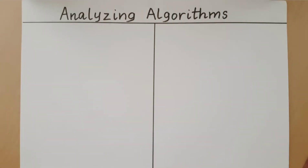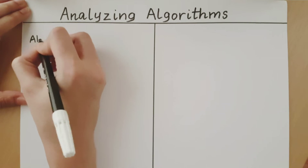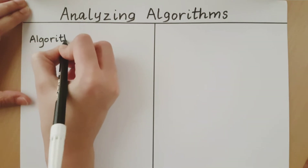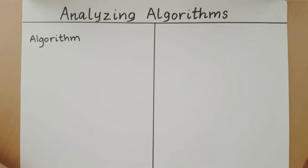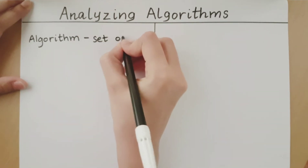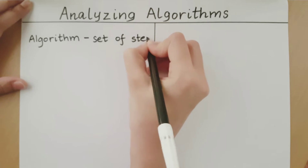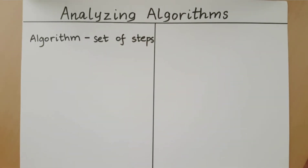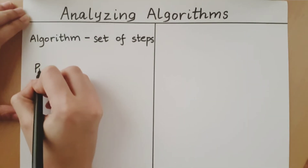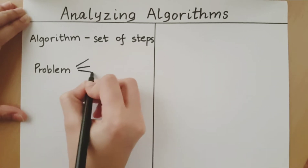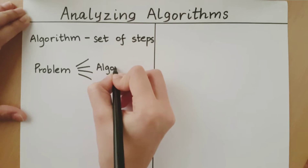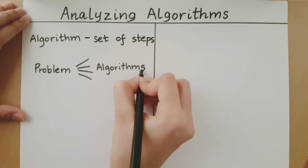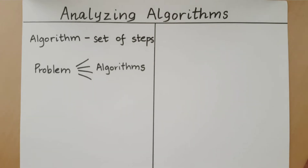Analyzing Algorithms. An algorithm is a set of steps required to solve a particular problem. One problem can have many algorithms which can provide the required solution. In such a case, we need to have a method of finding the best algorithm which can solve the problem.